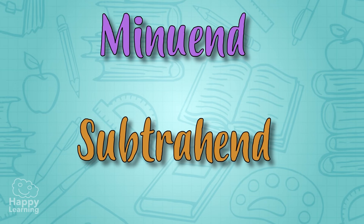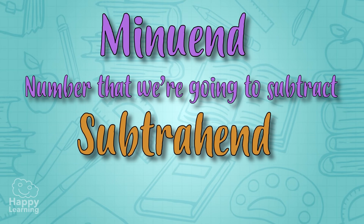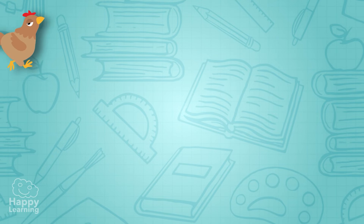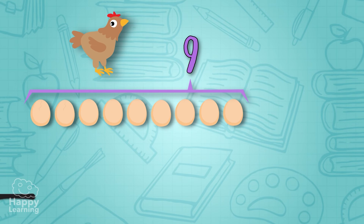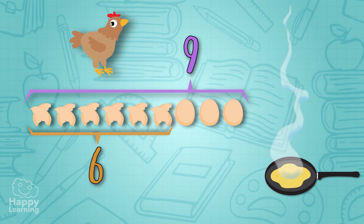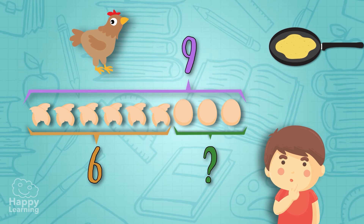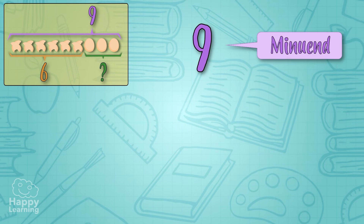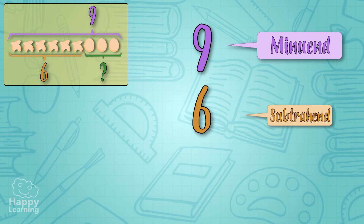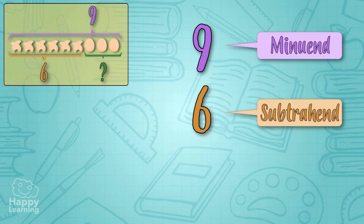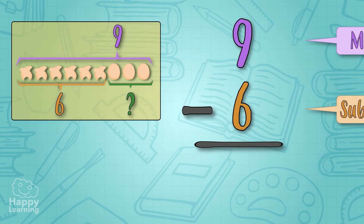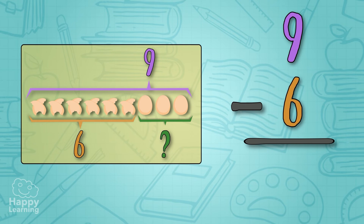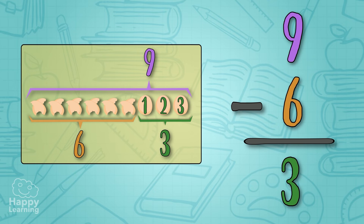Each of the figures that form part of the subtraction are called the minuend and the subtrahend. The minuend is the number we're going to subtract from, and the subtrahend is the quantity we're going to take away. For example, if a chicken lays nine eggs but we use six to make an omelette, how many eggs do we have left? We place nine as the minuend, six as the subtrahend, add the minus sign, draw a line, and subtract: nine minus six equals three eggs.